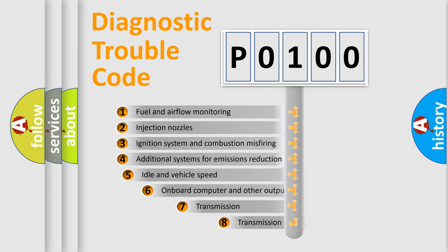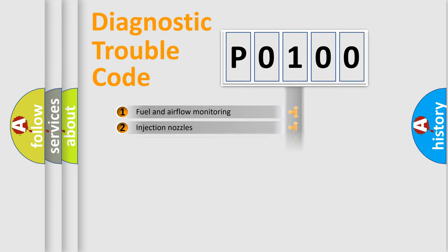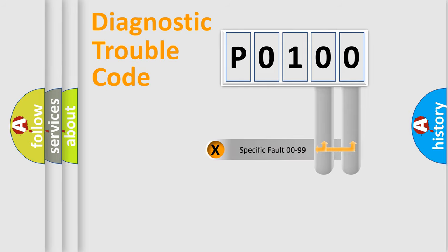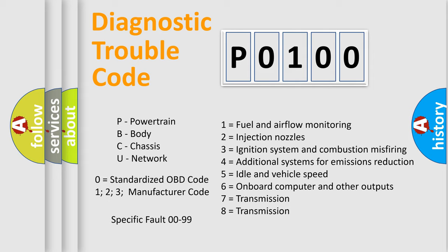The third character specifies a subset of errors. The distribution shown is valid only for the standardized DTC code. Only the last two characters define the specific fault of the group. Let's not forget that such a division is valid only if the second character code is expressed by the number zero.